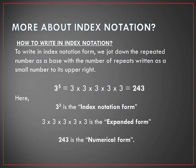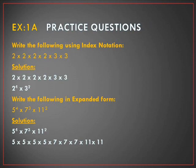To write in index notation, we simply write the repeated number as a base with the number of repeats written as a small number to the upper right. Other than index notation form, you also need to learn about expanded form and numerical form. Here, 3 to the power 5 is the index notation form, 3 × 3 × 3 × 3 × 3 is the expanded form, and 243 is the numerical form.